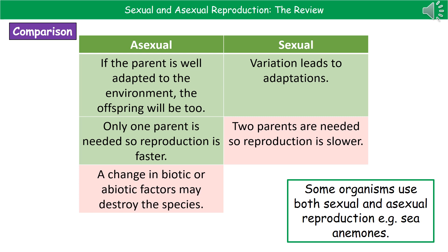However, there is a big downside to asexual reproduction: because every member of the population is genetically identical, a change in biotic or abiotic factors could wipe out every single organism in the species, as there is no variation. For sexual reproduction, the key advantage is that it leads to variation, allowing organisms to adapt to different environments. The key disadvantage is that two parents are required, making it a much slower process.